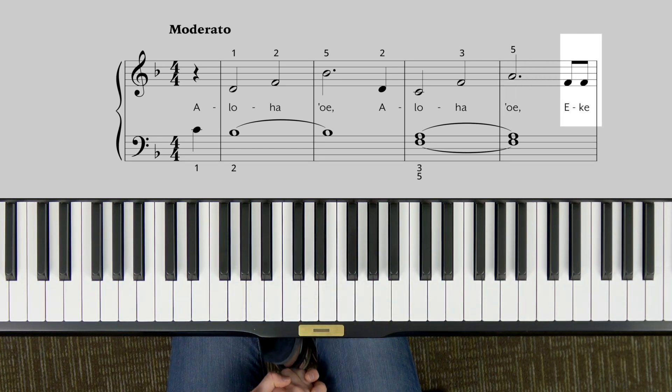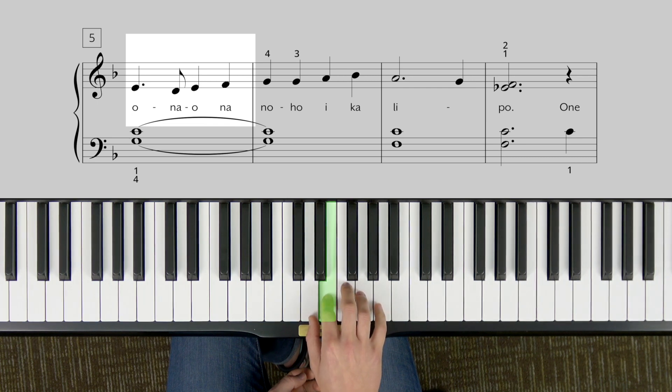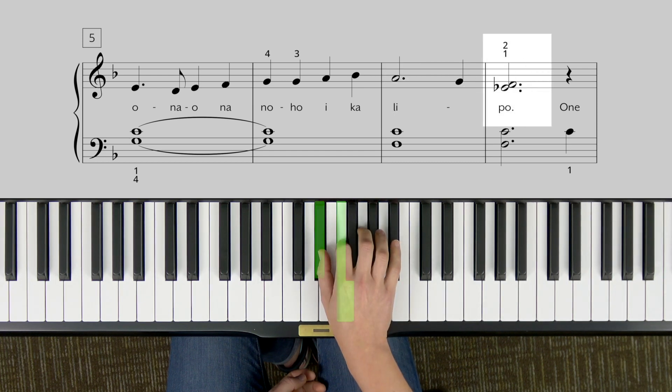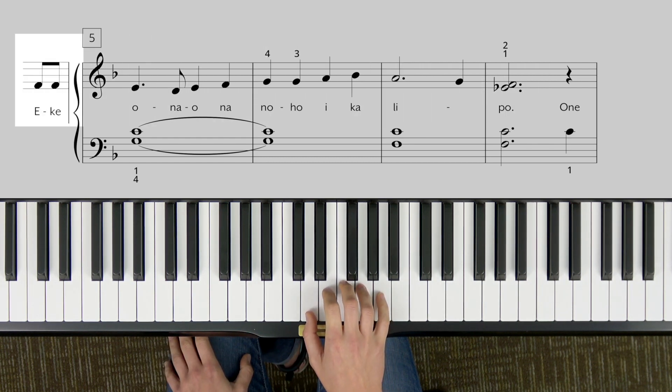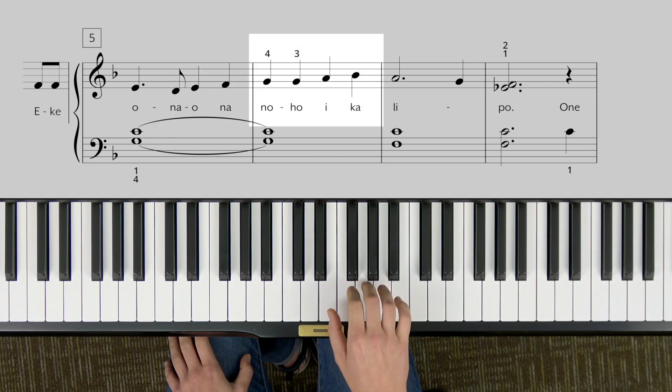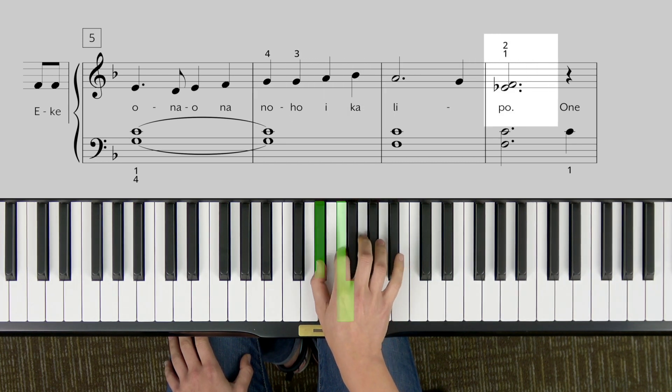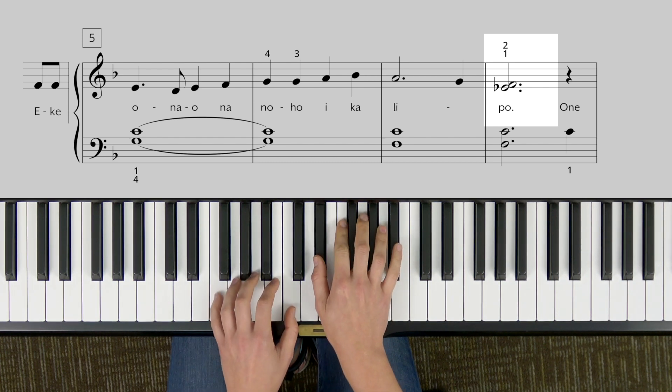Okay, going on to the next phrase. Your five finger is on A, so that means your three finger will start on F. Okay, just a little bit of complexity. Your three finger starts on F. Eke ona onoho eke li. Two notes, E flat and F. That's to create some tension so it can relax into the next chord.